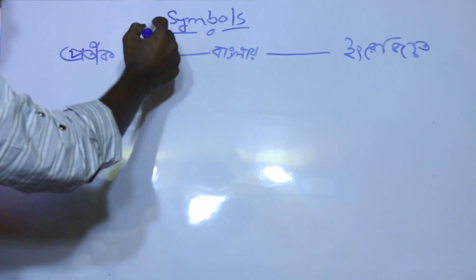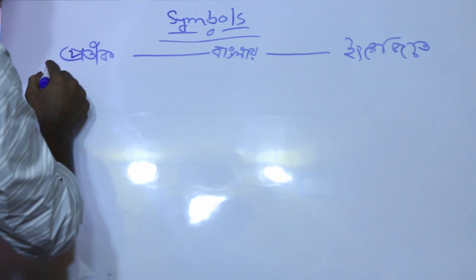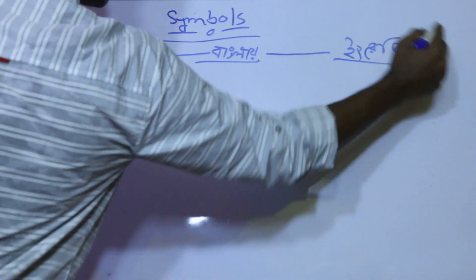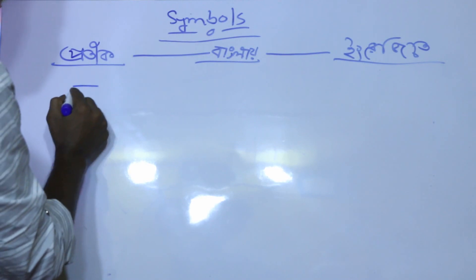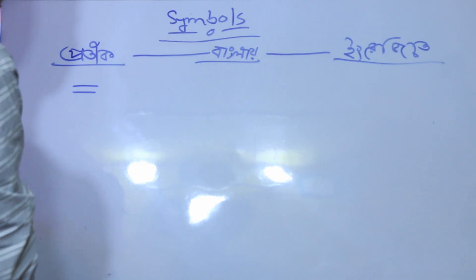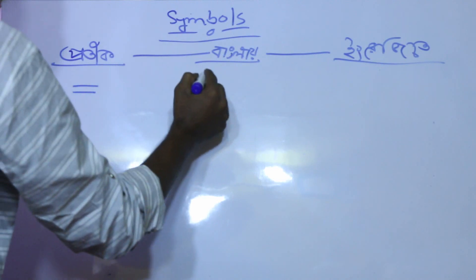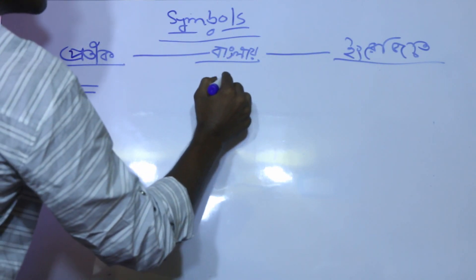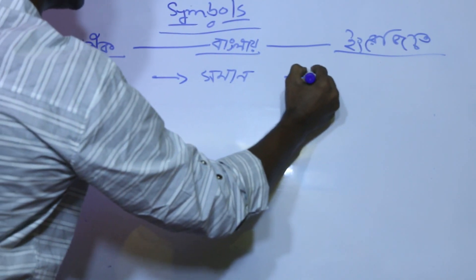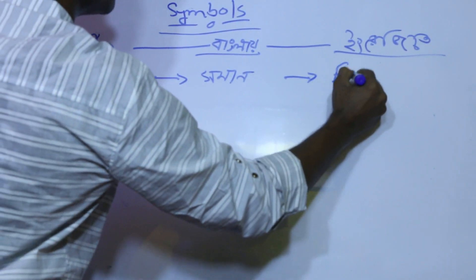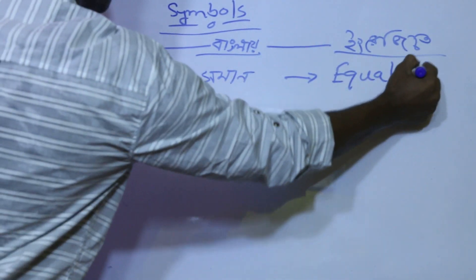The symbols are also known as symbols. The symbols are equal to shaman. The symbols are also equal to shaman — equal to.